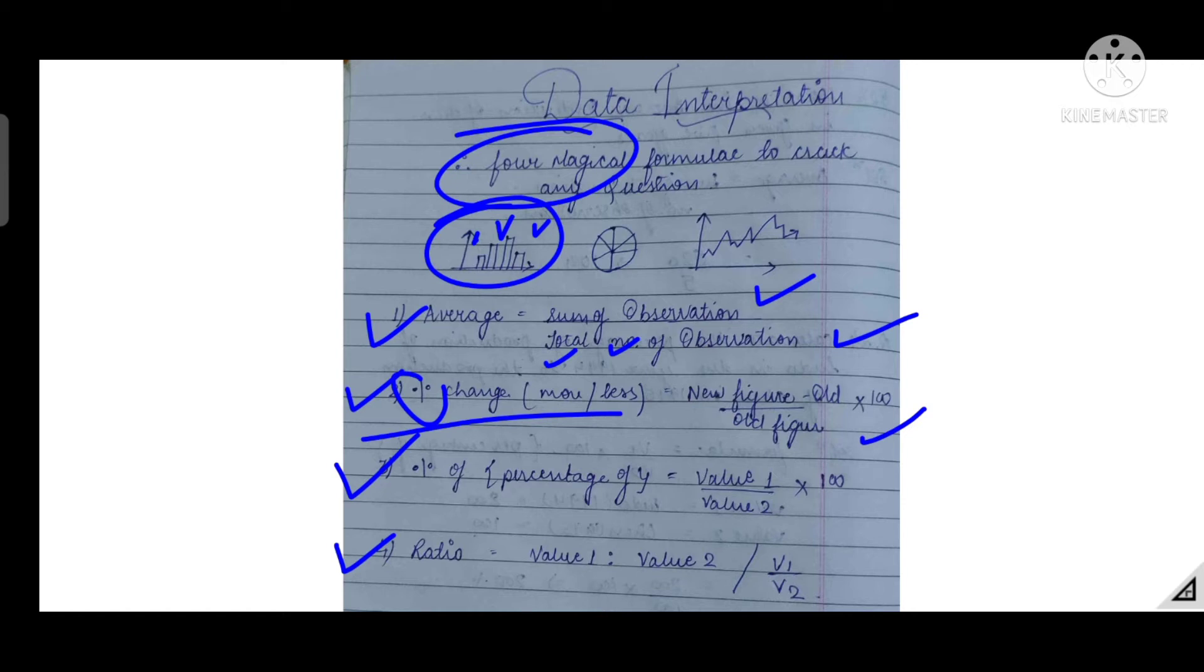The answer will come upon old figure into 100, giving us the percentage change. The third very important formula is percentage of. Students get confused between the second and third formula. If there is a percentage of question, you will clearly get this term in the question: find the percentage of. What we have to do is take the two comparative values, value 1 and value 2, make the ratio and multiply by 100.